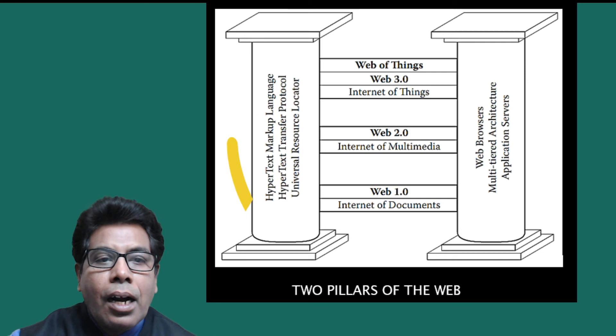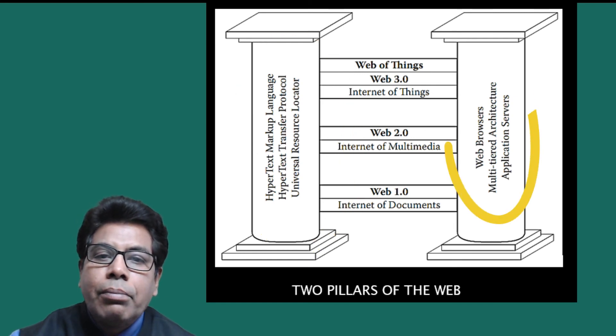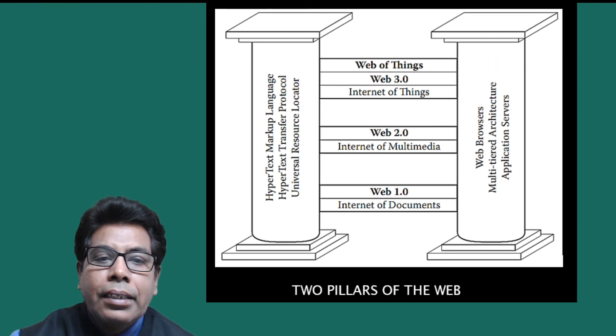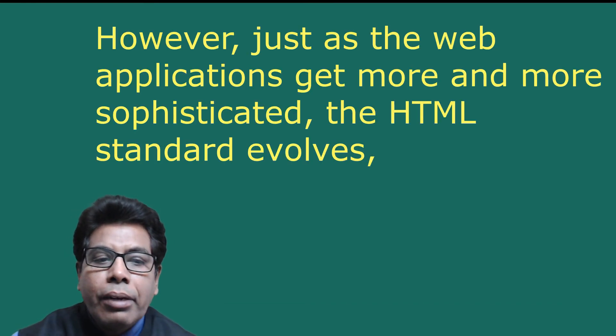As the two pillars of web applications and the internet revolution, the protocols — HTML, HTTP, URL — and the software — the web browser and the standardized three-tiered application server — will continue to be the two pillars of the web of things and play an important role in building WoT applications, as depicted in the figure. The figure shows HTML, HTTP, and URL as one pillar; the web browser and multi-layered application server as the second pillar; and the evolution from Web 1.0 (internet of documents) to Web 2.0 (internet of multimedia), Web 3.0 (internet of things), and finally the web of things above that. However, just as web applications get more sophisticated, the HTML standard evolves and a large number of standards, sub-standards, and APIs have been created, for example Java EE and the Java ME platform.